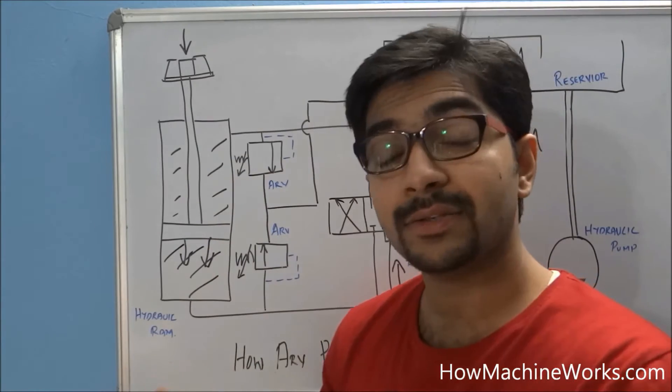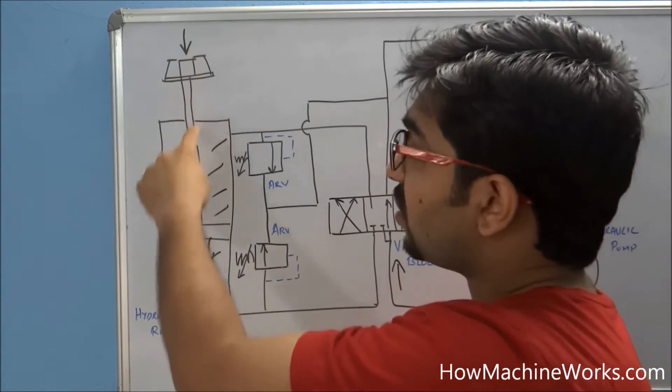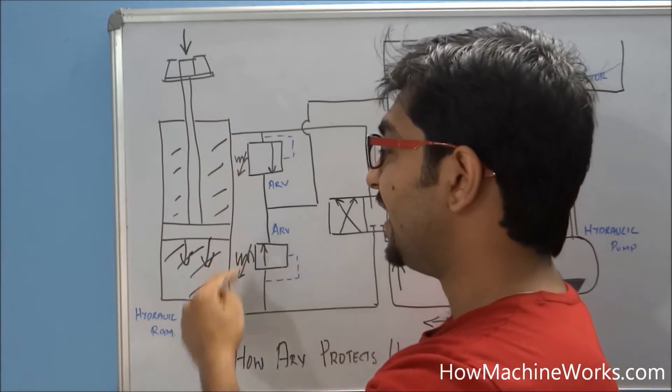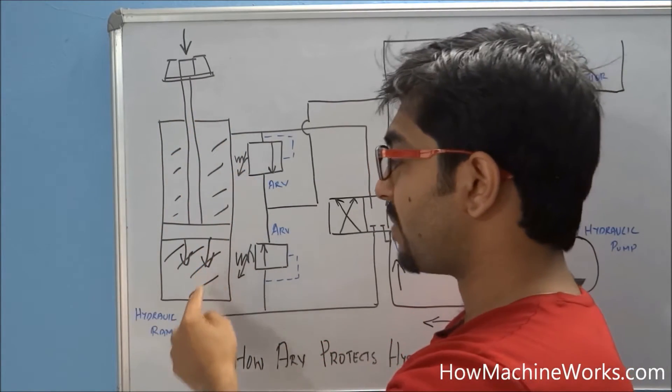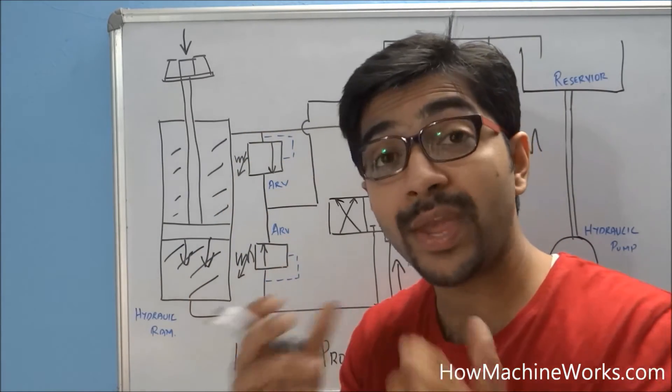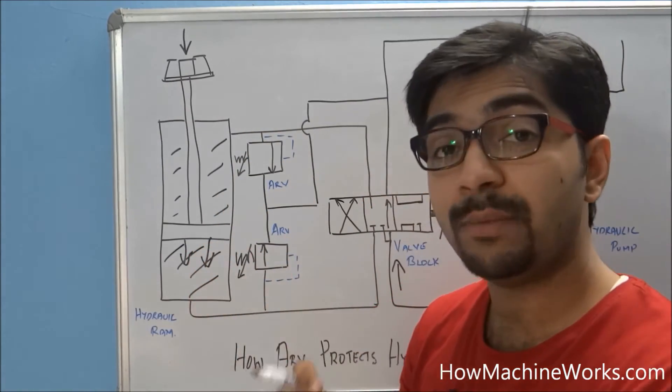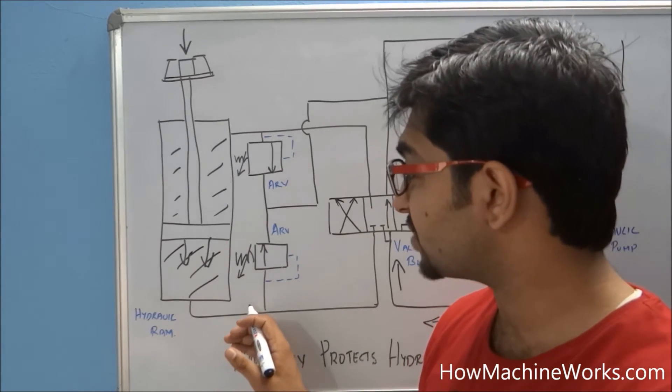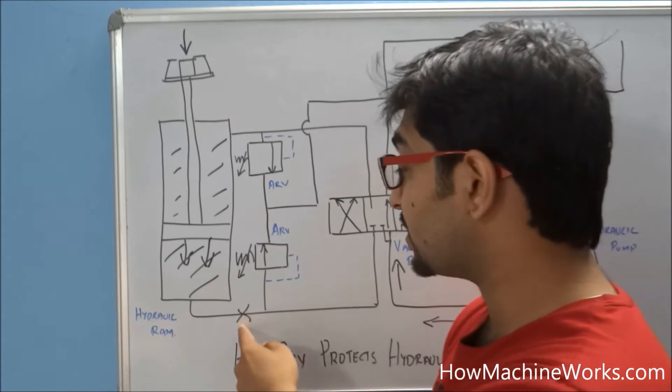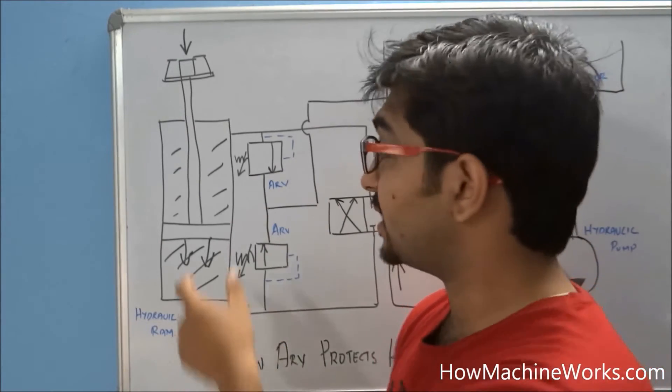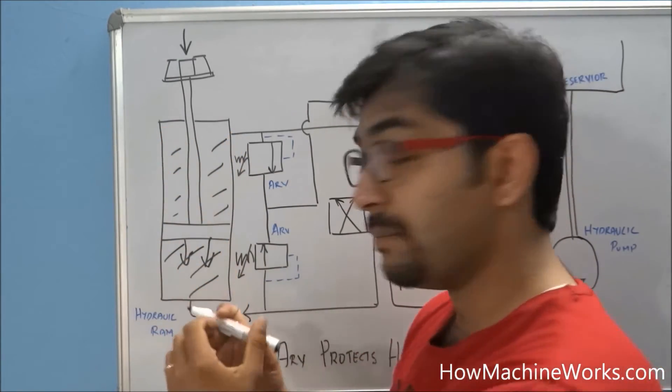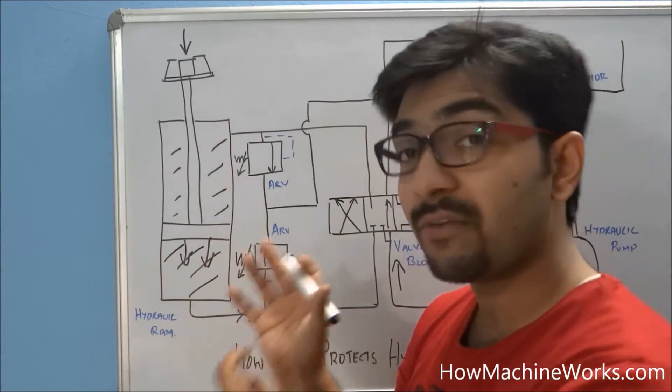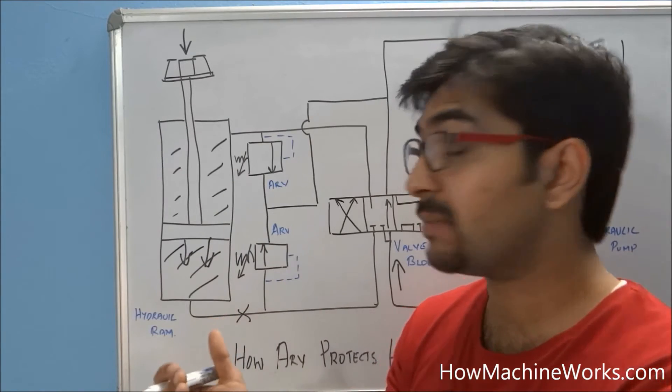As per Pascal's law, this load acting on the hydraulic ram will be spread equally all over the hydraulic ram and over the hydraulic hoses. Whichever is the weakest part of the system will burst. Normally the hose is the weakest part, so there are chances for the hose to burst. If it is not bursting, there can be chances that this hydraulic cylinder can bulge or the hydraulic rod can bend. Such failures can happen.